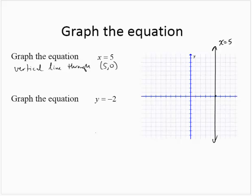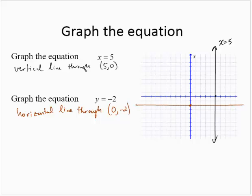Graph the equation y equals negative 2. That is a horizontal line through (0, −2). Finding (0, −2) and drawing the horizontal line through that point — this is the line y equals negative 2.